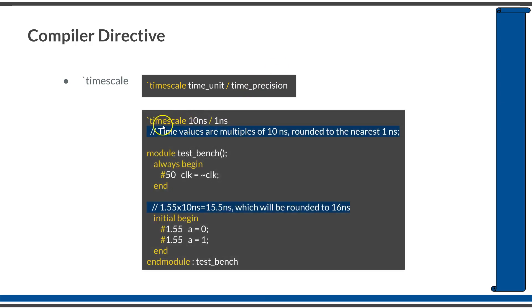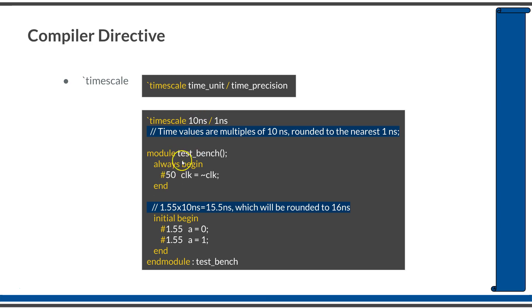Assume we define `timescale with a time unit of 10 nanoseconds and time precision of 1 nanosecond. This means time values are multiples of 10 nanoseconds, and any fractional time unit is rounded to the nearest 1 nanosecond. For example, in a testbench always block if the clock toggles every 50 time units, that is 50 × 10 = 500 nanoseconds per half period, giving a full clock period of 500 + 500 = 1000 nanoseconds.